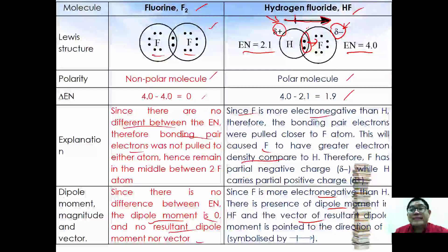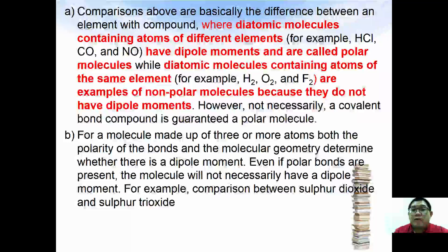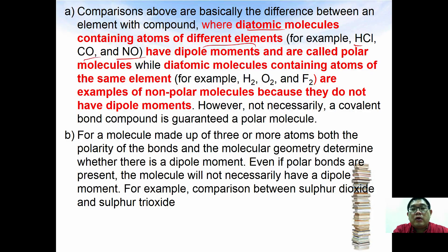This is the fundamental understanding of polar vs non-polar molecules. For polyatomic molecules, we compare further. Diatomic molecules made of different elements — such as HCl, CO, and NO — have dipole moments and are polar molecules. Diatomic molecules made of the same element — such as H₂, O₂, and F₂ — are non-polar because they have no dipole moment. However, a covalent compound is not automatically guaranteed to be polar.